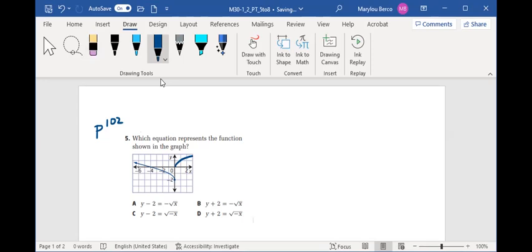If we look at key points, 0, 0 on the image is 0, negative 2. Another key point on our y equals root x graph is 1, 1. On the image, it's negative 1, negative 1.